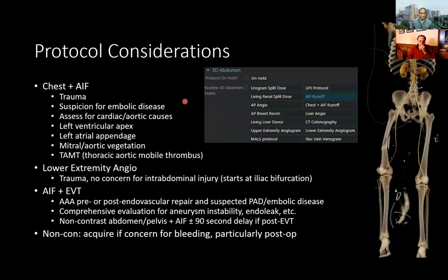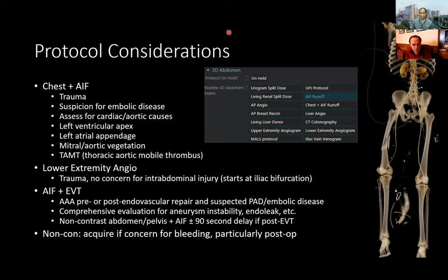It is possible to combine an AIF with other exams depending on the indication. We might add a chest CT in the setting of trauma or suspicion for embolic disease. We may perform only a lower extremity angio beginning at the level of the pelvis if there is no concern for intra-abdominal injury. We may combine our AIF with an exam for an abdominal aortic aneurysm pre- or post-endovascular treatment, potentially adding a non-contrast and a 90-second delay. We add a non-contrast acquisition if there is concern for bleeding, particularly post-operatively, to assess intrinsically hyperdense material.